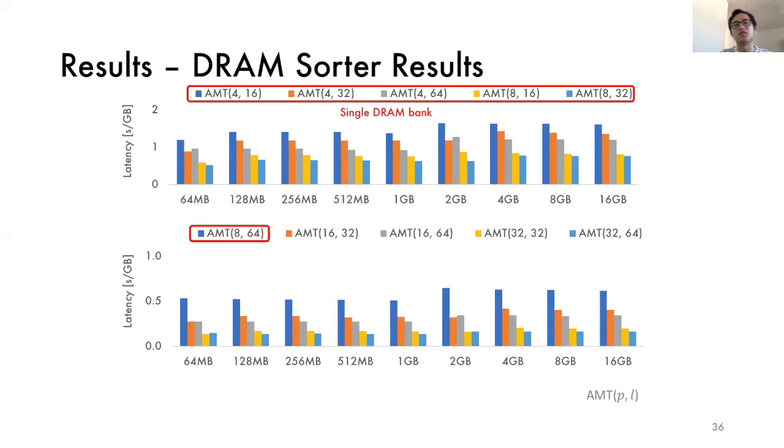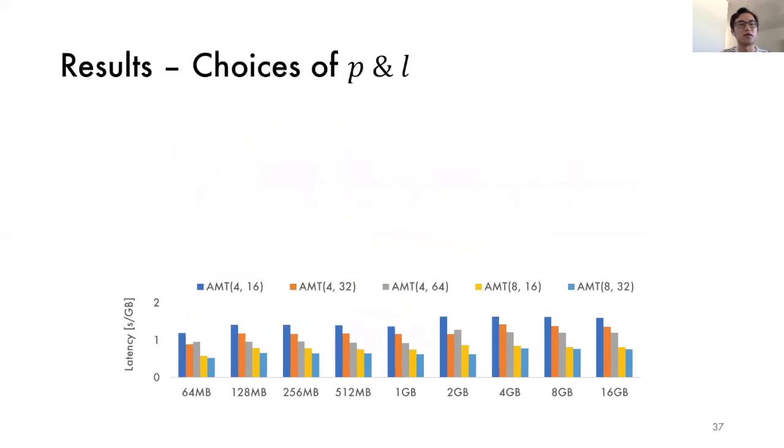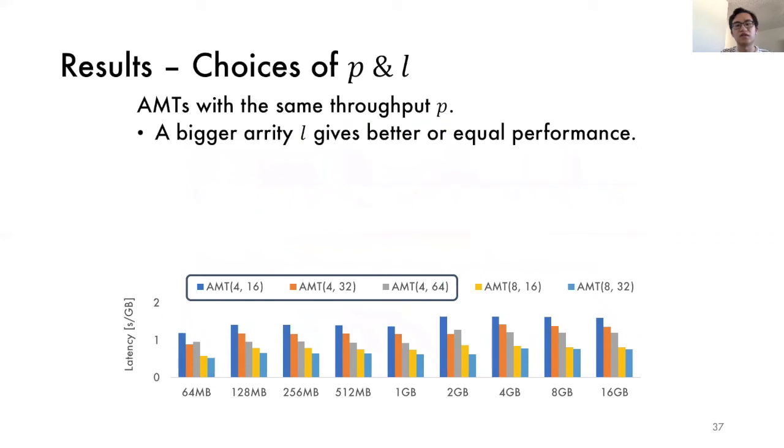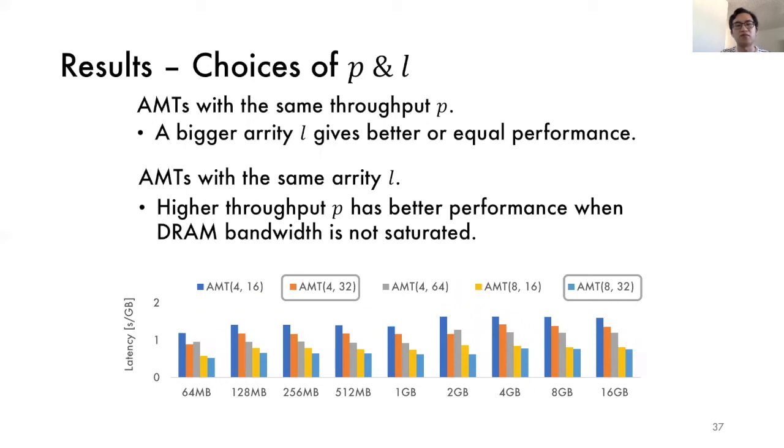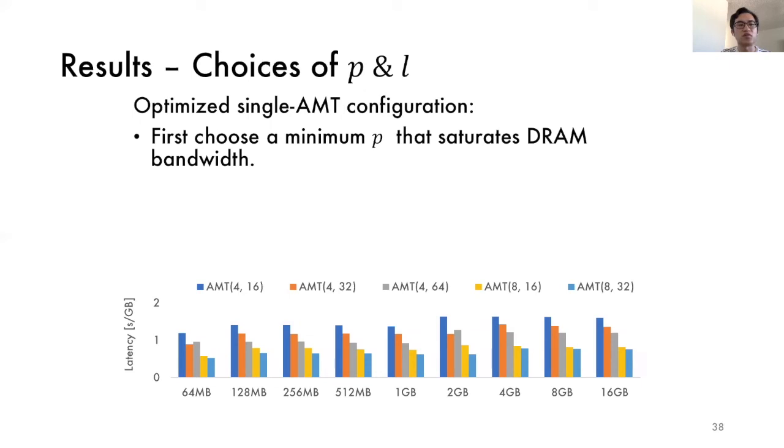For example, all the AMTs with a throughput of P equal to 4 and P equal to 8 correspond to the single DRAM bank configuration. And AMTs with P equal to 16 and P equal to 32 correspond to the configuration of two DRAM banks and four DRAM banks respectively. Now let's come back to the question of how to choose the right P and L given the FPGA and DRAM configuration. The first observation is that when merge trees have the same throughput, the greater arity L usually has better or equal performance. On the other hand, when merge trees have the same arity L, the higher throughput gives better performance as long as DRAM bandwidth is not saturated.